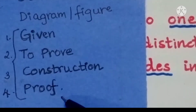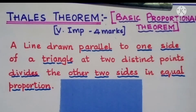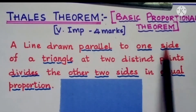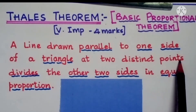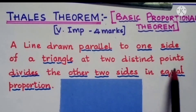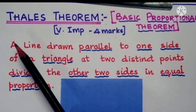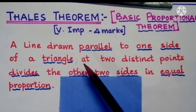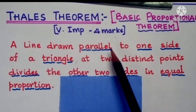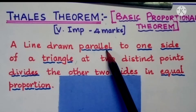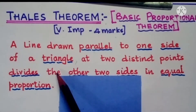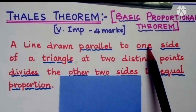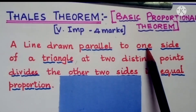So what does the Thales theorem state? A line drawn parallel to one side of a triangle at two distinct points divides the other two sides in equal proportion. A line is drawn parallel to one side of a triangle — a triangle has three sides and we are taking only one side, whichever is more convenient to us.